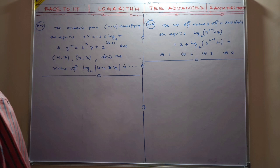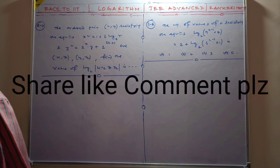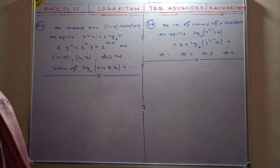Now the next question: find the ordered pair (x, y) satisfying these equations. log_4(y) = x² - 1/6, so y = 4^(x² - 1/6). And y² = 2^x · y · 2^(2x). Let a = 2^x. Then y² = a · y · 2a² ... so y² - ay - 2a² = 0. Factoring: y² - 2ay + ay - 2a² = 0, giving y(y - 2a) + a(y - 2a) = 0.